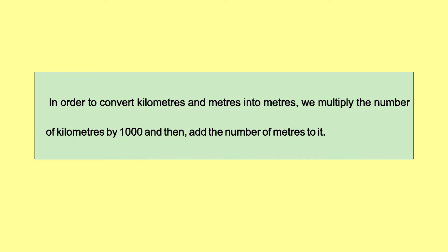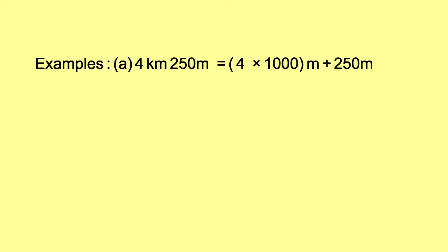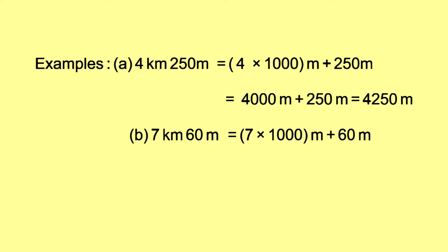In order to convert kilometers and meters into meters, we multiply the number of kilometers by 1,000 and then add the number of meters to it. Example: 4 kilometers 250 meters is equal to 4 × 1000 meters plus 250 meters, which is 4,000 plus 250, equal to 4,250 meters. 7 kilometers and 60 meters is equal to 7 × 1000 meters plus 60 meters, which is 7,000 plus 60, equal to 7,060 meters.